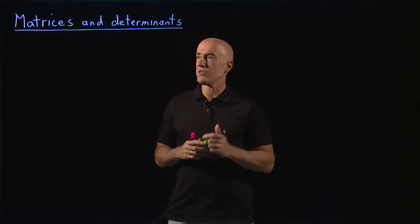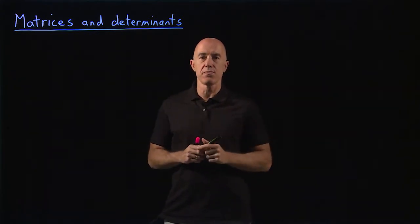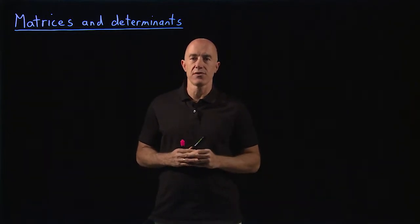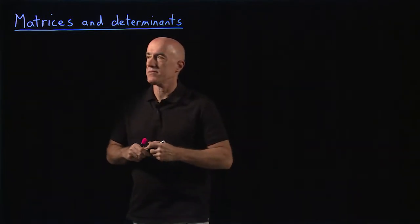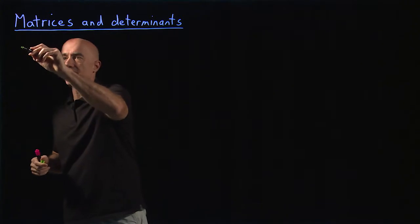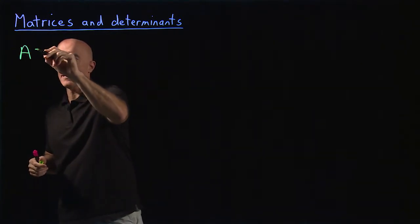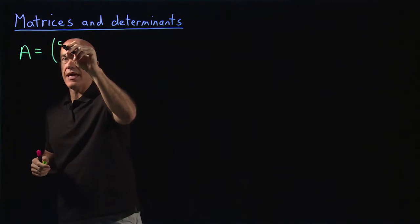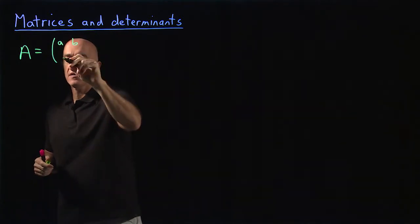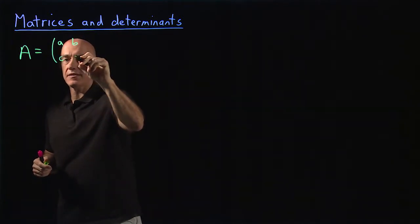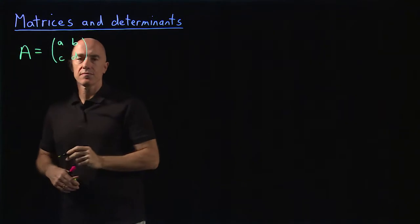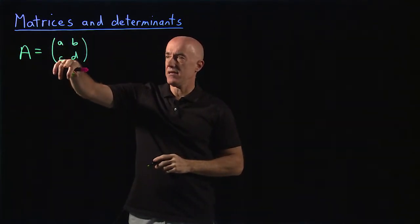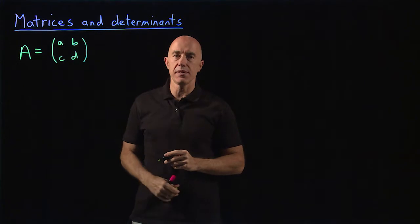We can restrict just to two by two matrices. So that means a matrix that has two rows and two columns. Let's write down our general two by two matrix: A, B in row one; C, D in row two. In column one we have A, C; in column two we have B, D.